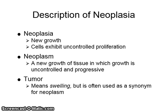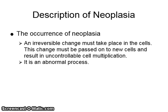Tumor means swelling, but is often used as a synonym for neoplasm. In order for a neoplasia to occur, an irreversible change must take place in the cells. This change must then be passed on to new cells and result in uncontrollable cell multiplication. It is an abnormal process.